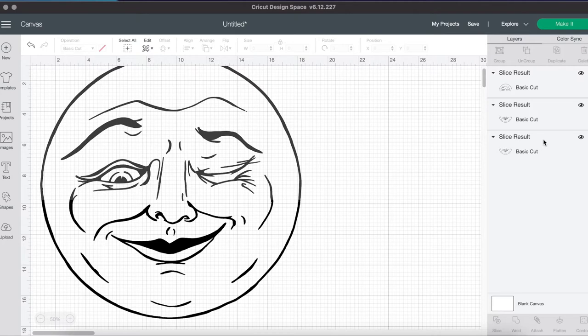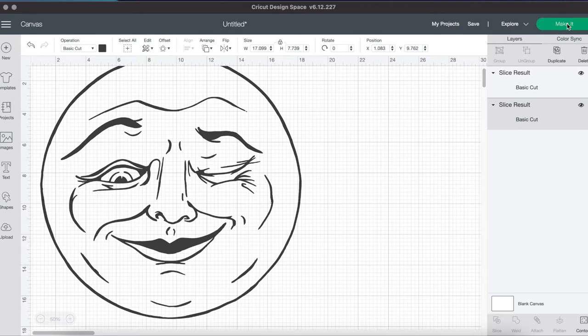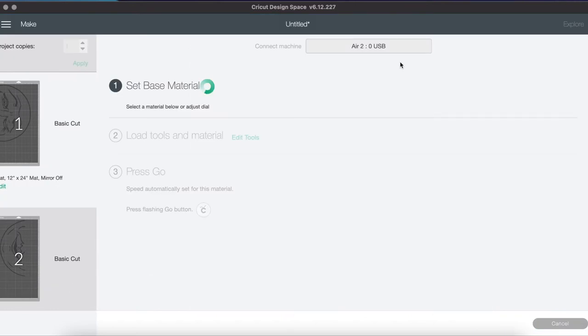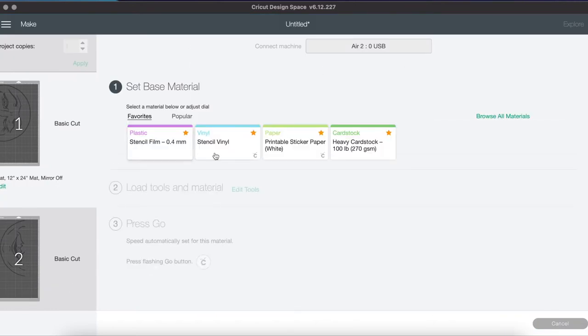Now if you don't need your design to be any bigger than 11 and a half inches in diameter, then you can just disregard all of the slicing and the squares and all of that. All you're going to need to do is hit make it and go ahead and choose stencil vinyl for the setting.